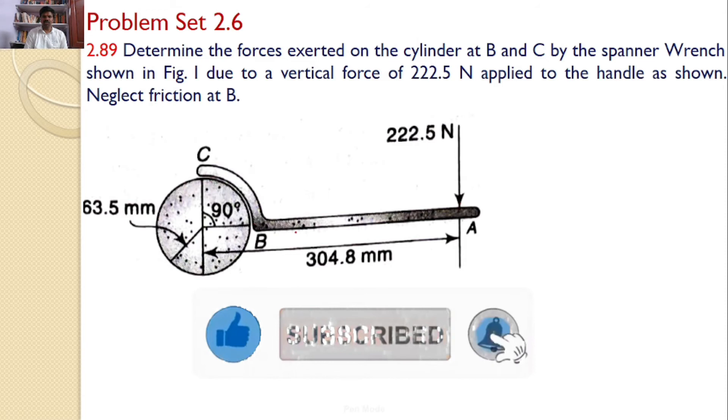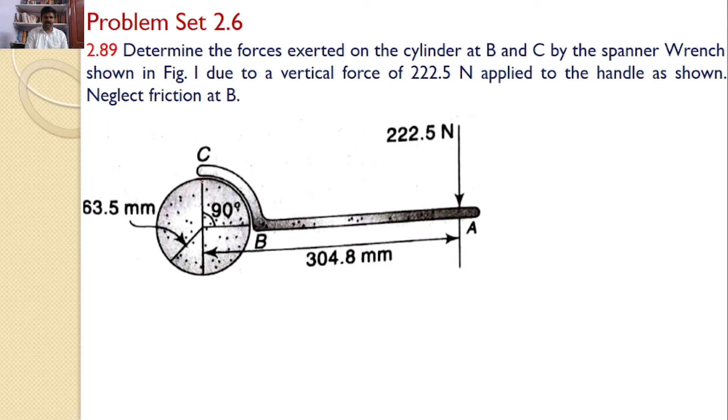Our interest is to find the reactions at C and B. At B, it is in contact in this direction, hence there is only one reaction developed at B. But at C, it is not permitted either in the horizontal direction nor in the vertical direction. Hence, two reactions are developed at C and only one reaction developed at B.